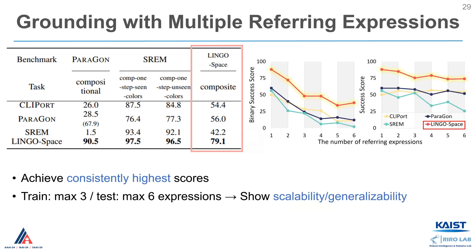Even with multiple referring expressions, LingoSpace achieves consistently highest scores. Also, we show our method's scalability and generalizability by training with maximum three referring expressions and testing with maximum six referring expressions as in the chart.